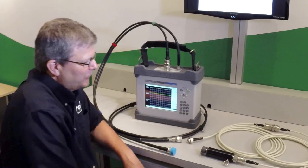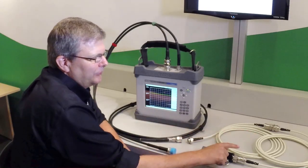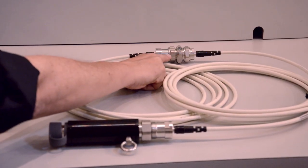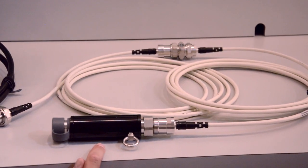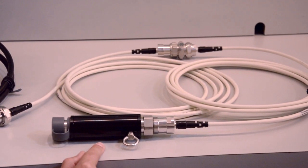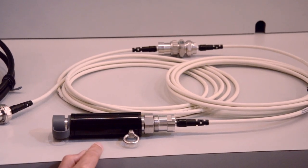The system that we're going to demonstrate on today is two five meter cables with a PIM standard installed at the end of the first five meter cable and a low PIM termination installed at the end of the cable. In this case, the low PIM termination will be simulating the antenna on the system.